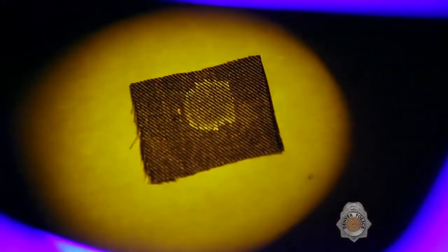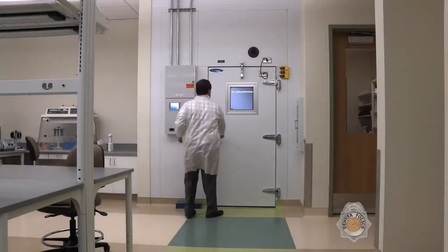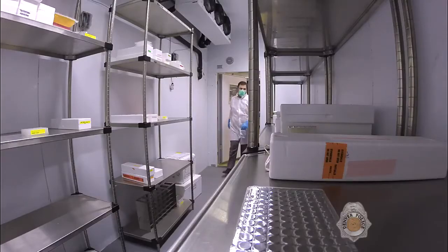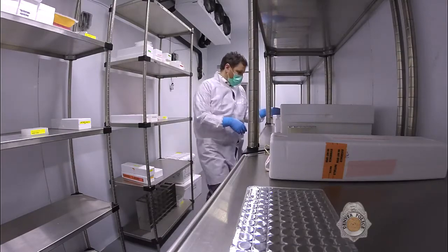Stains not visible to the naked eye can be located with an alternative light source. Some body fluids fluoresce under this blue light, making it a useful tool for finding stains that aren't visible using natural light. Any biological evidence obtained is stored in a walk-in freezer until it's ready for DNA analysis.